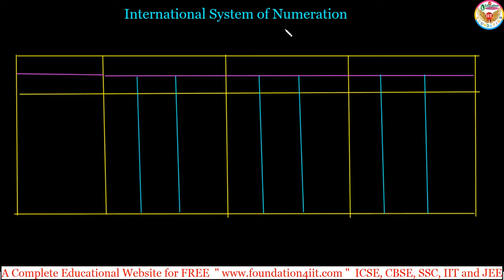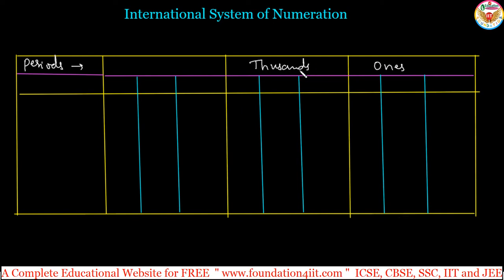Now we will see the international system of numeration. Same as we discussed in our Indian system, in the international system also we have periods. The first three periods are the same. The ones period is the same, next we have the same thousands, but then we move to millions. Every set is only three digits — three digits followed by three digits and three digits in this international system.